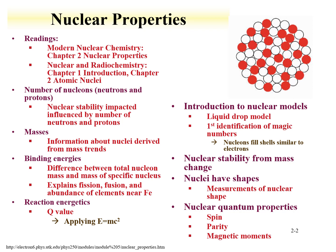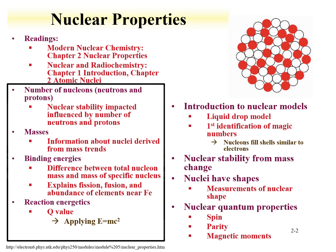We're going to end the discussion on nuclear properties talking about nuclear quantum properties, primarily spin, parity, and magnetic moments. It will be a brief review talking about how these properties are derived from the nucleus and the properties of the nucleons within it. Part one of the lecture on nuclear properties is going to explore the number of nucleons and how that impacts the nucleus. There will be a discussion on nuclear masses, binding energies, and reaction energetics, with lecture one ending on discussions related to the Q value.